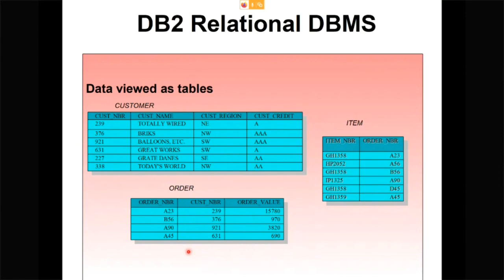DB2 data can be viewed as tables. A customer table is made up of rows and columns. When you manipulate data, you select from a table, selecting columns, and you might qualify which rows you want to look at. There might be multiple tables — a customer table, an order table, and an item table. In my examples I'll use a very simple table called Table One.